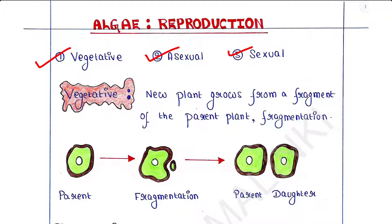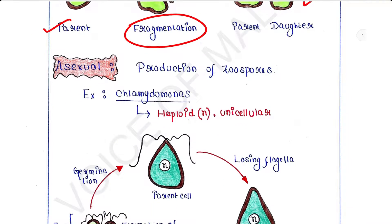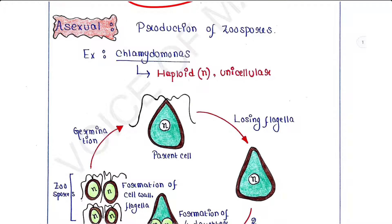First we will talk about vegetative reproduction. Vegetative reproduction occurs in plants in which a new plant grows from a fragment of the parent plant. This process is called fragmentation. The new daughter plant is generated from this fragmented part. This is called vegetative reproduction by fragmentation.